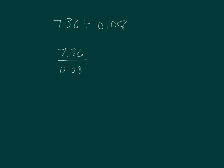And we're going to multiply it by 1 in the form of 100 over 100 to be able to solve our problem. 7.36 times 100 is 736. 0.08 times 100 is 8.